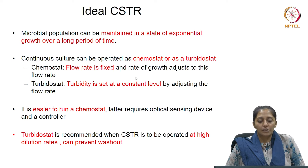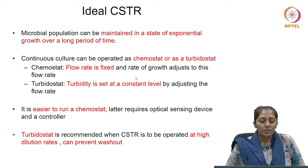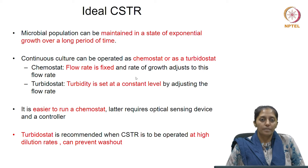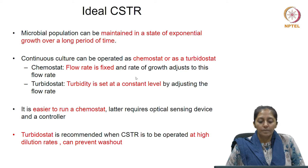Continuous cultures can be operated either as a chemostat or as a turbidostat. In a chemostat, the flow rate is fixed and the rate of growth of the culture is adjusted to the flow rate. This gives us an opportunity to manipulate the growth rate of the culture through modulations in the flow rate.